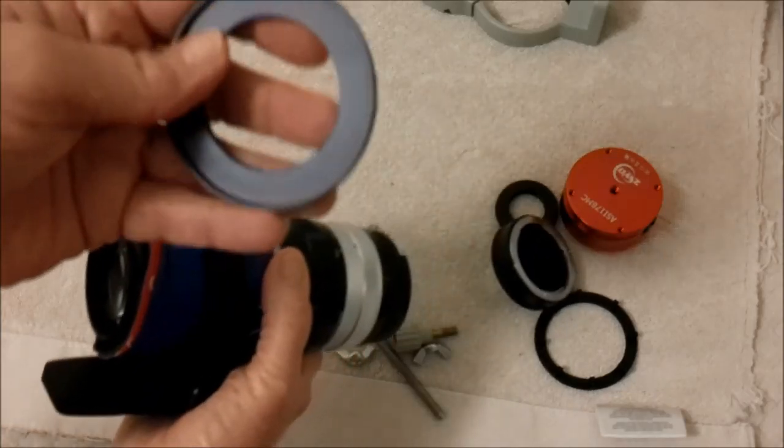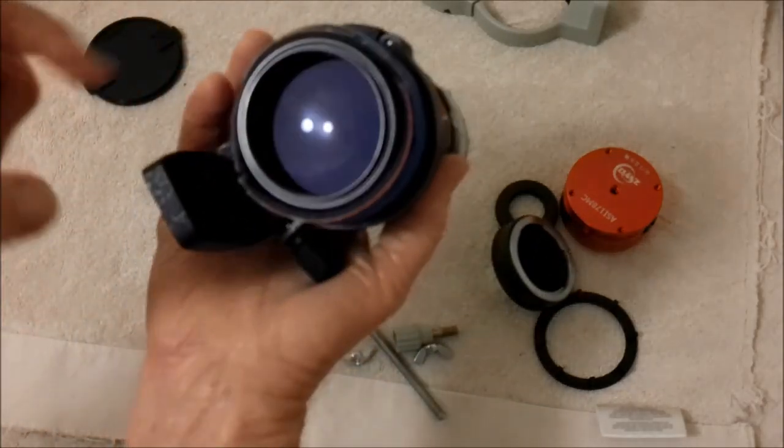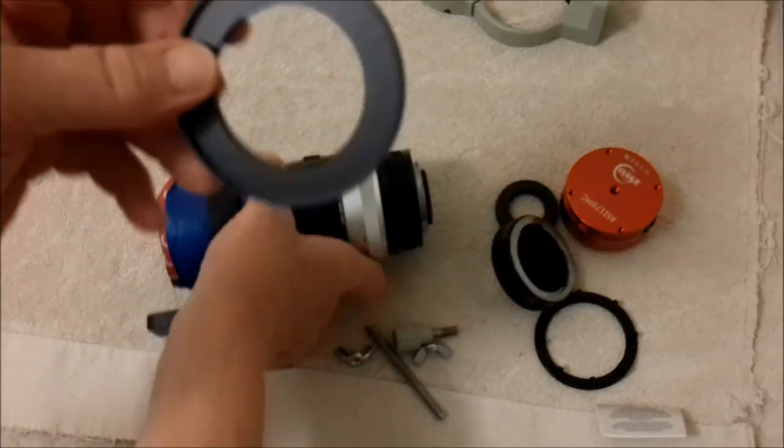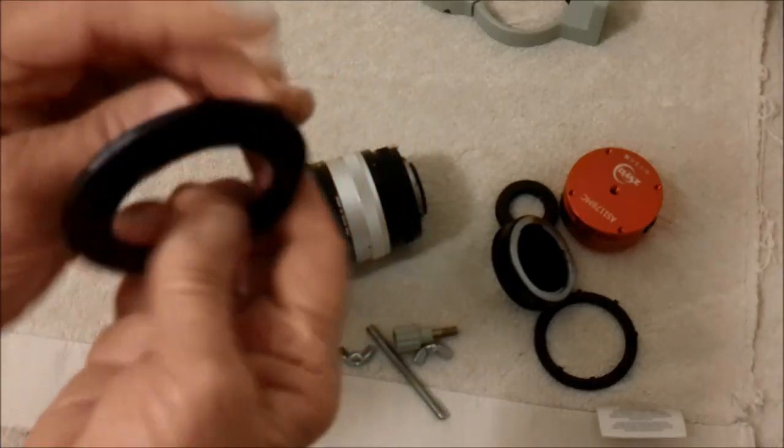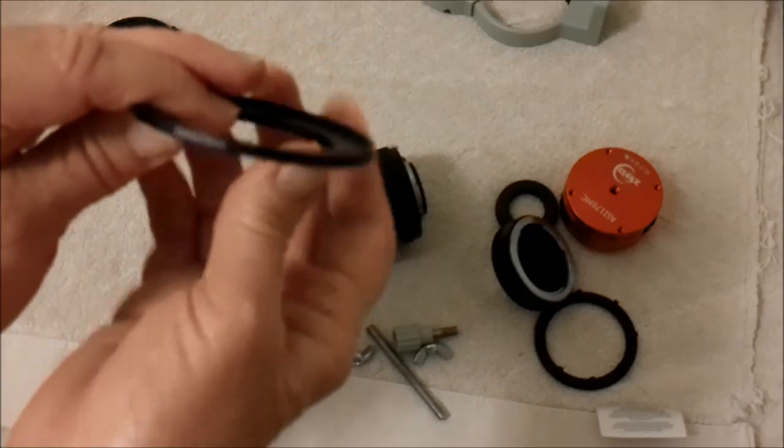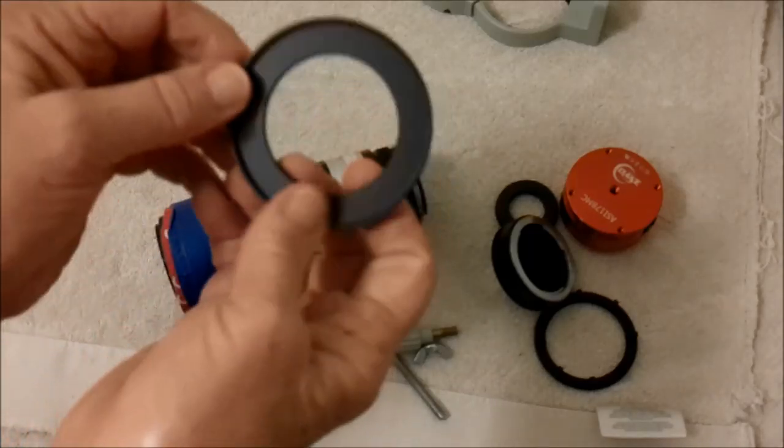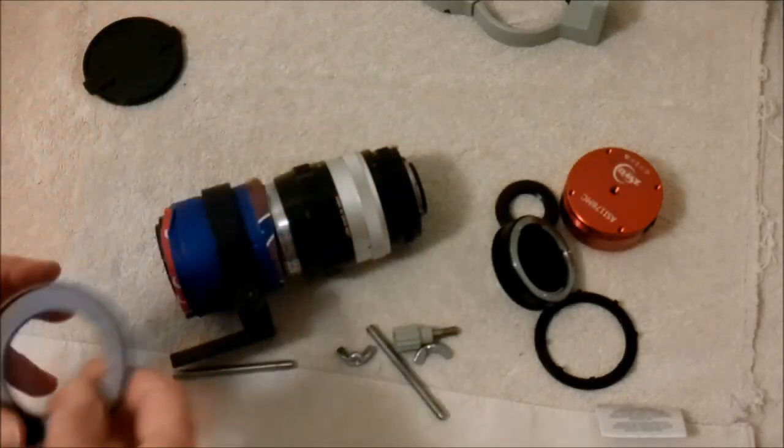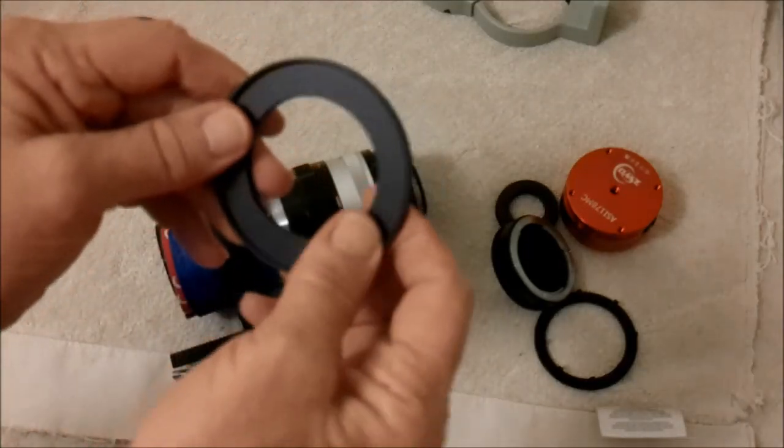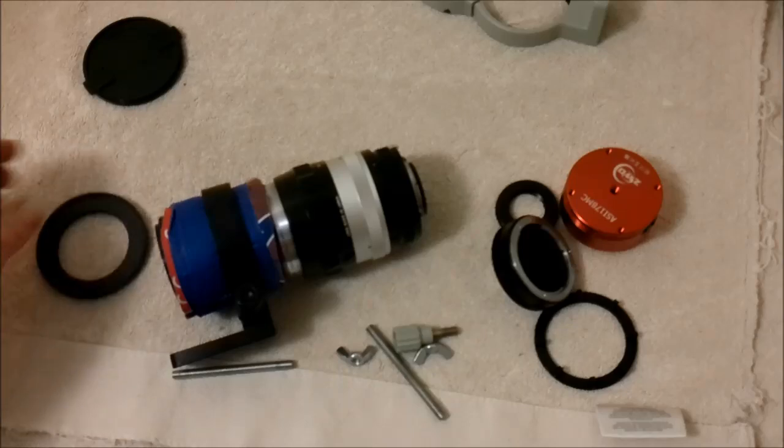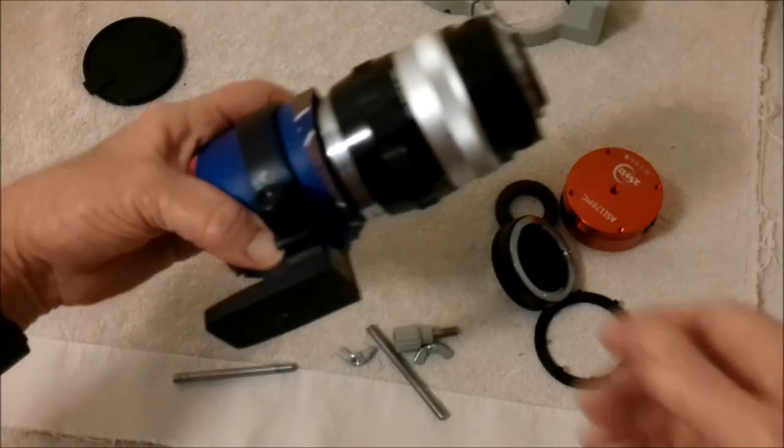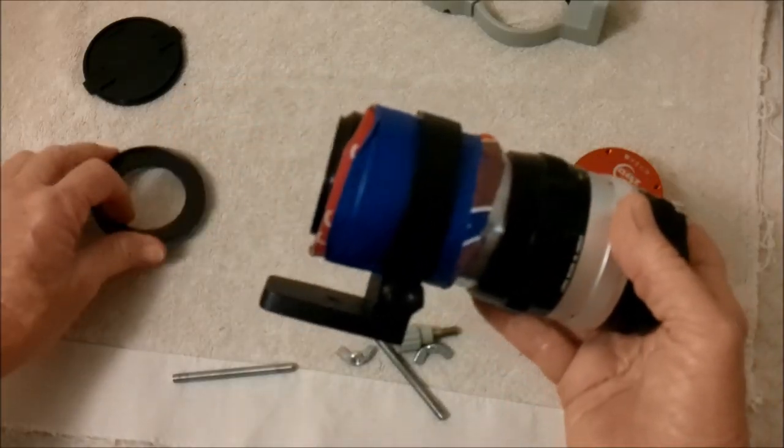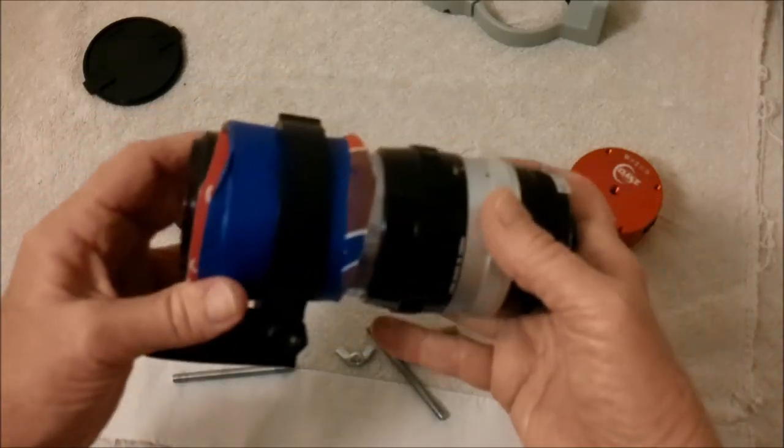So I picked up a 52 to 72, I believe they call it a step up ring. And that way I can put the 72 millimeter filter on here. And then when I'm using my 300 millimeter lens or my 400 millimeter lens, it takes the 72 millimeter filter.